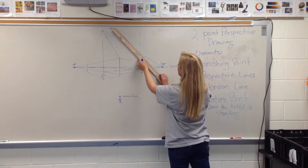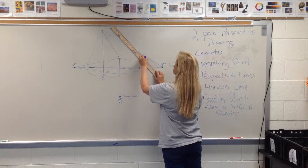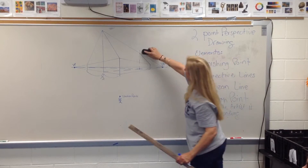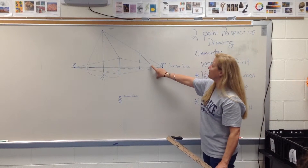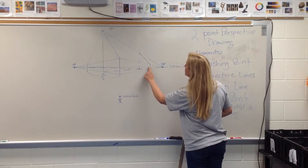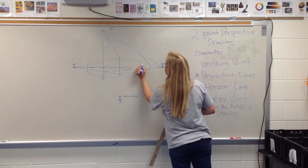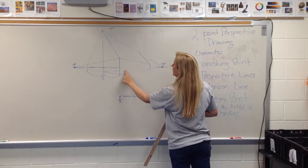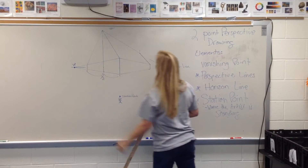Draw a line from the top of the side of your building to where those two lines intersect, and there you go — you've got a completed building. If I take these away, it makes it a little easier to see. Now get rid of the horizon line, erase all the guidelines in the middle, and now you've got a building.